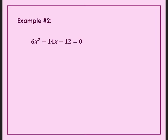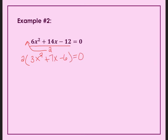Our second example. It's already set equal to zero — great. The next rule is to check if there's a greatest common factor. Is there a number that goes into all of these? The greatest number that goes into all of these is a 2. So I'm going to factor out a 2 and divide everything by 2. I get 3x squared plus 7x minus 6 equals zero. The 2 is on the outside — it's not going to affect my answer, but it does affect my factors.